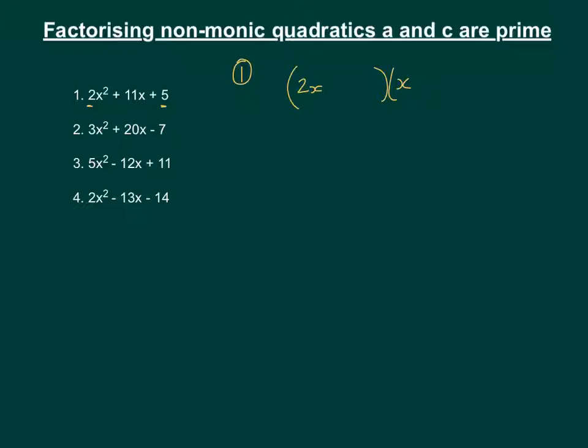And then also we know that they're both positive because both of these are positive, and we also know that these numbers are either going to be a 1 or a 5. The only challenge is to find where they are placed, whether the 5 is here or whether the 5 is here.